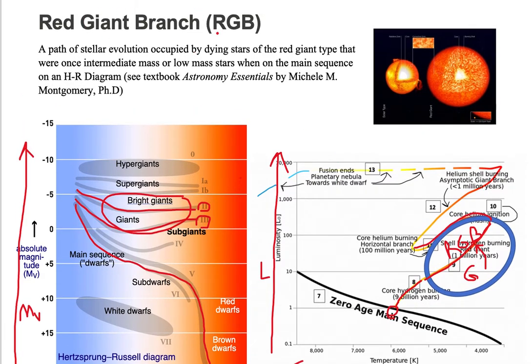On the red giant branch we're looking at a path of stellar evolution. It's this path occupied by dying stars of the red giant type.